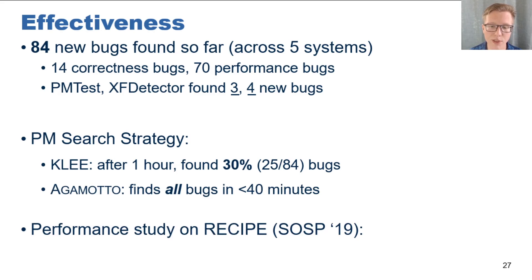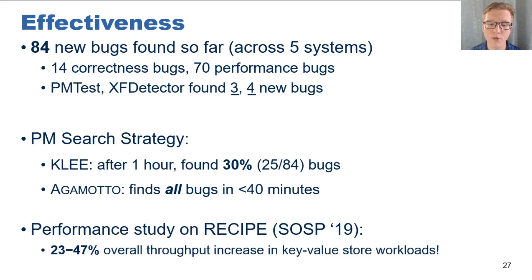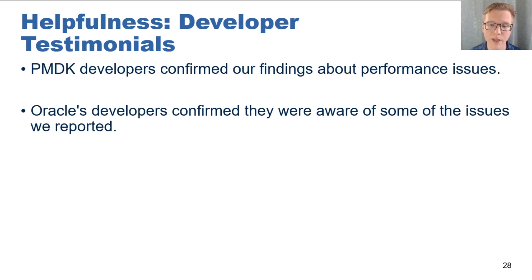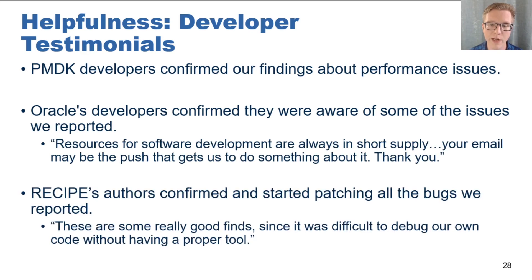Since we found so many performance bugs, we wanted to know whether any of them were majorly impactful to the overall performance of the system. We performed a case study on Recipe, an academic research prototype which provides a persistent indexing structure. We found that by fixing all of the performance bugs in Recipe, we were able to increase the performance of the structure by between 23 and 47%. We were also able to report some of these findings to developers, not only to help validate our bug findings, but also to help them develop more reliable systems. Importantly, none of these developers reported any false positives, and so all of our bugs were real bugs. Developers noted the benefits of Agamotto and appreciated its thoroughness and ease of use.